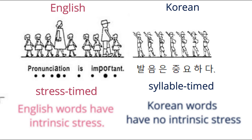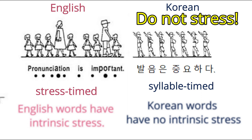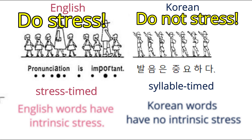Korean words, by contrast, do not have intrinsic stress. So, to say Korean words correctly, we need to say words without stressing any syllable. An American who learned Korean as a non-child has a non-Korean accent due to her habit from the English language — the urge to stress some syllables when no stress is needed. The situation is the other way around for a Korean learner of English: the impetus to speak each syllable on a regular beat.